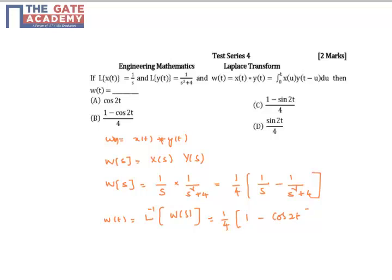w(t) equals 1/4 times (1 - cos 2t). So in the given options, the answer is D.